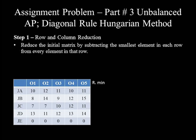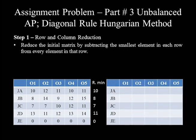Step 1: row reduction and column reduction. Reduce the initial matrix by subtracting the smallest element in each row from every element in that row. The smallest element in row 1 is 10, row 2 is 8, row 3 minimum is 7, row 4 minimum is 11, and row 5 minimum is 0. Let's copy a blank table on the right-hand side for the row-reduced matrix. Subtracting row 1 minimum: 10−10=0, 12−10=2, 11−10=1, 10−10=0, and 11−10=1.